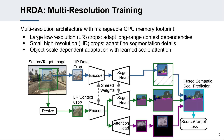As the importance of the context versus the detail crops depends on the content of the image, HRDA fuses both using an input-dependent scale attention. During UDA, the attention learns to decide how trustworthy the context and the detail predictions are in every image region.